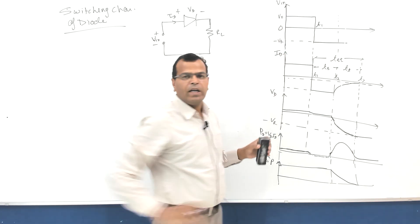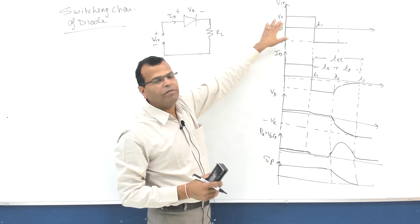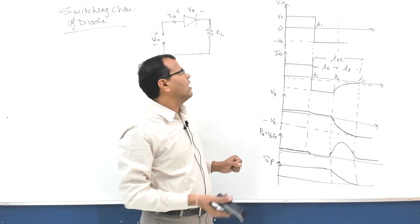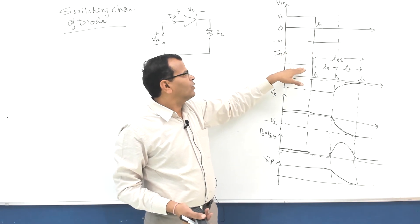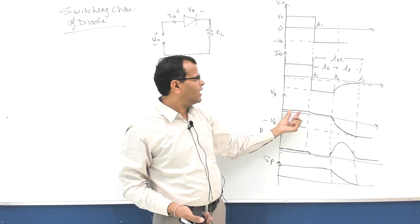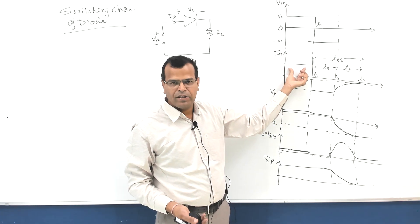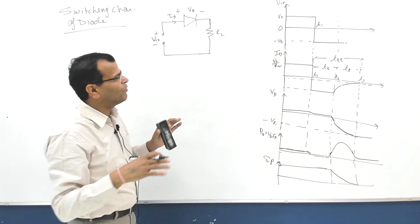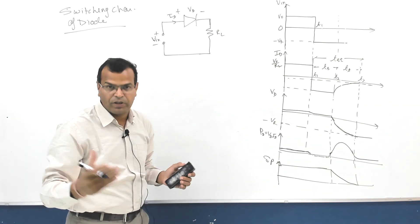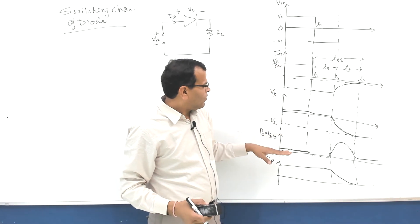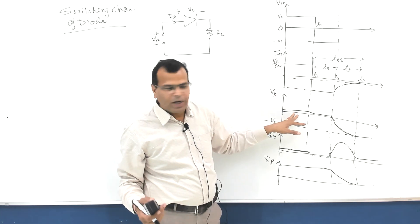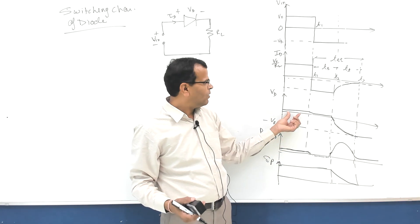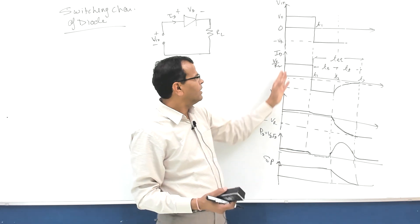The input voltage VF is a positive voltage - the diode is forward biased with voltage VF. When forward biased, current through the diode is the normal current, limited by VF upon RL with some voltage drop across the diode. The voltage across the diode is maybe 0.7 volt, so the product of current and voltage - the dissipation in the diode - is small when it is forward biased.